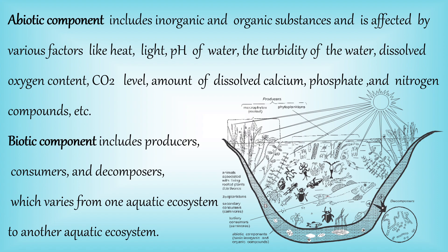The abiotic components of the aquatic ecosystem mainly include inorganic and organic compounds, and are affected by various factors like heat, light, pH of the water, turbidity of the water, dissolved oxygen content, carbon dioxide level, and amount of dissolved salts like calcium, phosphate, and nitrogen compounds.